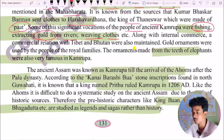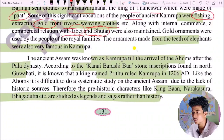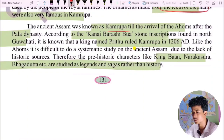Silk products like Muga were also made in ancient Kamarupa, just like in the present time. The silk cloths of king Bhagadatta were also mentioned in the Mahabharata. It is known from sources that Kumar Bhaskar Varman sent silk cloths to Harshvardhana, the king of Thaneshwar. Some of the significant occupations of the people of ancient Kamarupa were fishing, gold collection from rivers, weaving clothes, and agriculture.